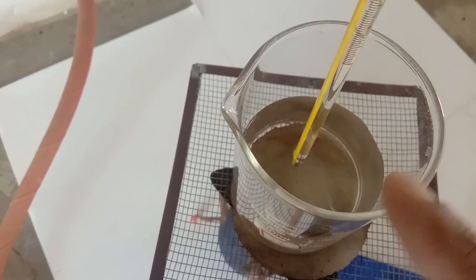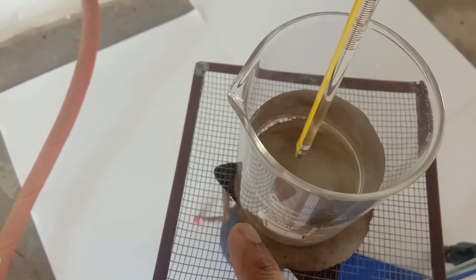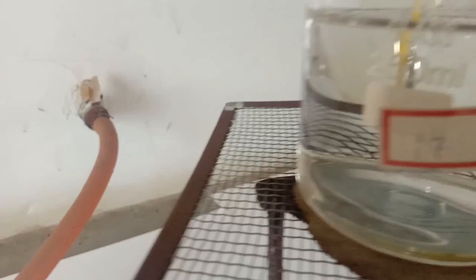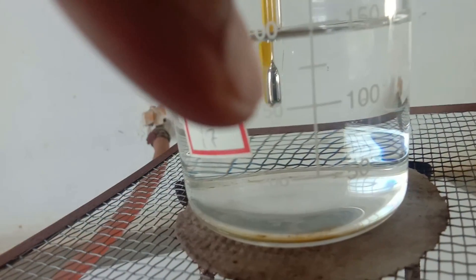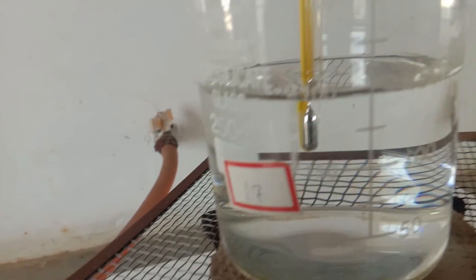You should make sure that the thermometer should not touch the walls of the container or the beaker, and it should not touch the bottom of the beaker as well. The bulb of the mercury should be well immersed inside the water.